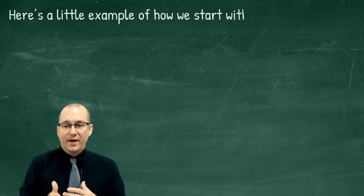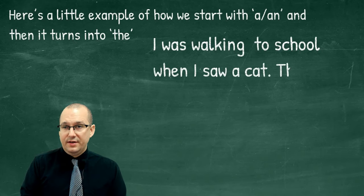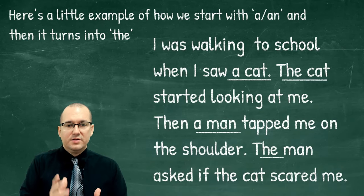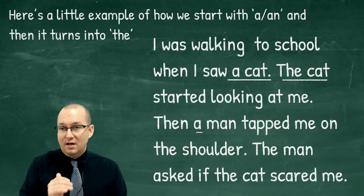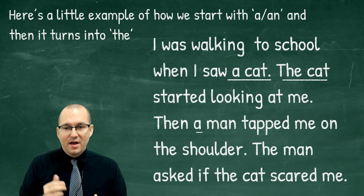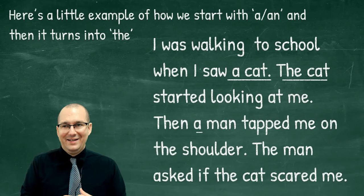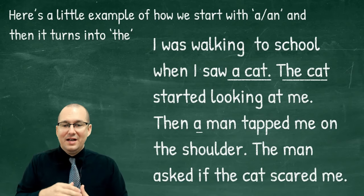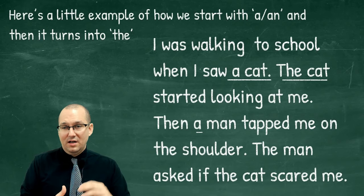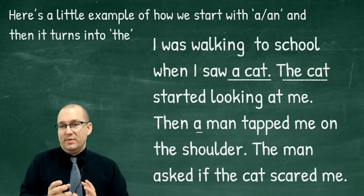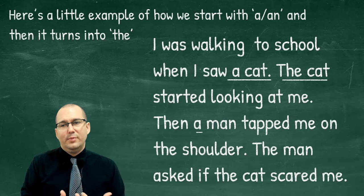Here's an example of how we start with 'a' and then it turns into 'the.' This emphasizes the idea of something new to the listener or reader. Listen: 'I was walking to school when I saw a cat. The cat started looking at me. Then a man tapped me on the shoulder. The man asked me if the cat scared me.' You can see: 'a cat' becomes 'the cat' the second time; 'a man' becomes 'the man' the second time. Now that I've pointed it out, you'll see this pattern a lot when reading books in English.